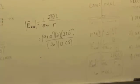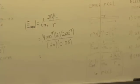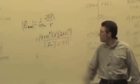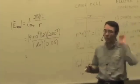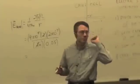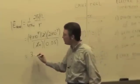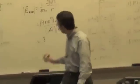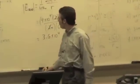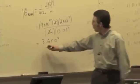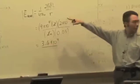So what do you get when you plug that in? I don't even need to actually work it out. The 2's are going to cancel. You get 18 times 10 to the second divided by 0.05. So it's 3.6 times 10 to the fourth.